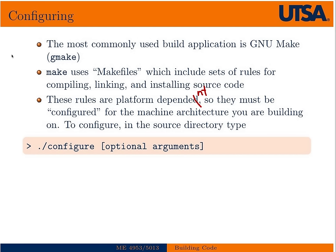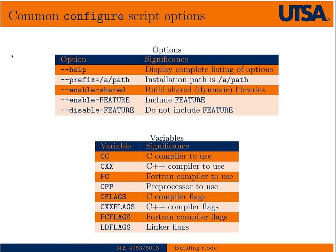There are many options that can go along with the configure script. Some will have hundreds of options, but there's always a help option and there's almost always a prefix option. Help is probably the first thing you should look at — to see a list of all the options. Especially when building on a machine where you don't have universal privileges, you'll need to set the prefix. On Shamu at UTSA, the default prefix is typically /usr/local, but you do not have access to write there, so you need to put it somewhere else — typically somewhere in your home directory or your local bin directory.